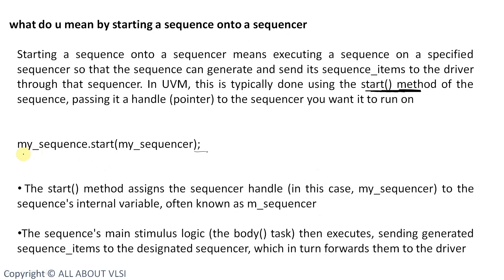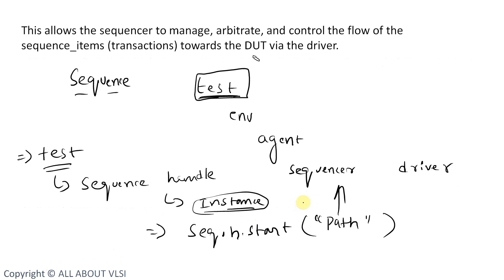So my_sequence.start(my_sequencer) — here we mention the path. The start method assigns the sequencer handle, in this case my_sequencer, to the sequence's internal variable known as m_sequencer. When we call start and pass the path to the sequencer, that sequencer handle is assigned to the internal variable m_sequencer.